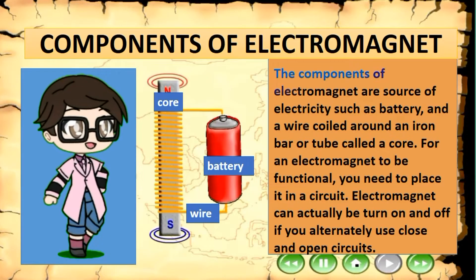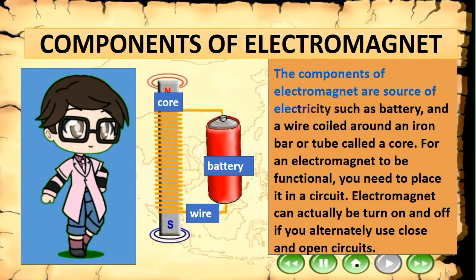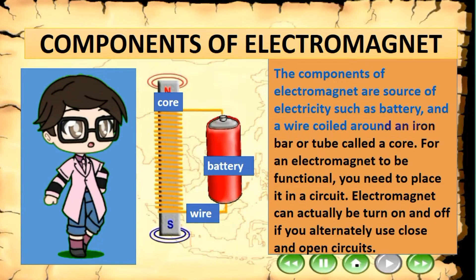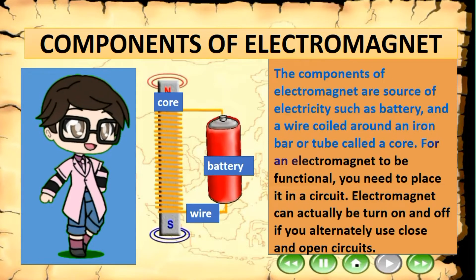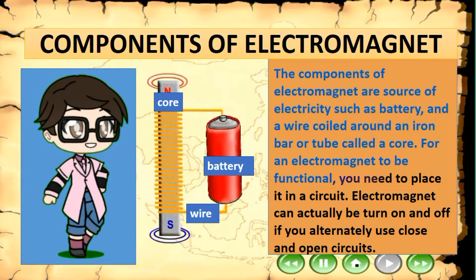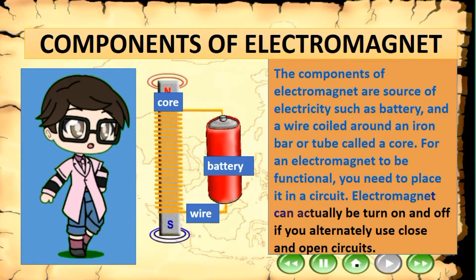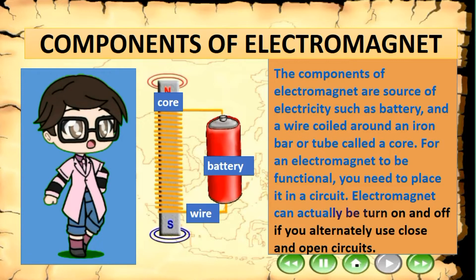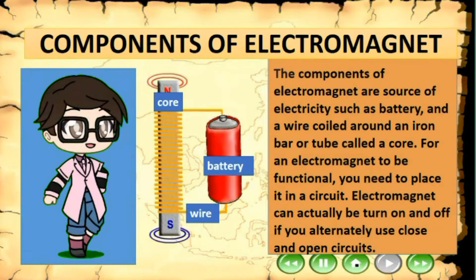The components of an electromagnet are a source of electricity such as a battery, and a wire coiled around an iron bar or tube called a core. For an electromagnet to be functional, you need to place it in a circuit. An electromagnet can actually be turned on and off if you alternately use closed and open circuits.